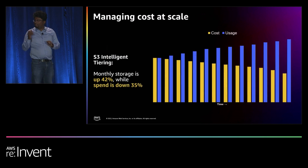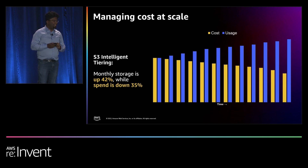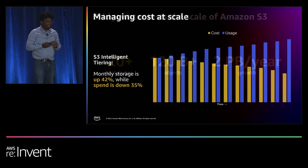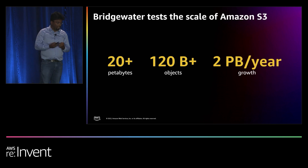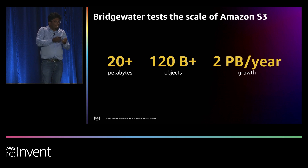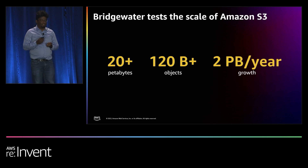On the topic of costs, it was easy for us to enable S3 Intelligent Tiering. This year, we went down almost 35% in cost while our storage is actually up year-over-year by 42% — so thank you S3 team for that. To give you a summary of the size at which we operate: for my team alone, we run a 20-petabyte scale S3 with about 120 billion objects, growing about two petabytes a year. We're really grateful for the S3 team building these amazing features so we can manage this at scale.